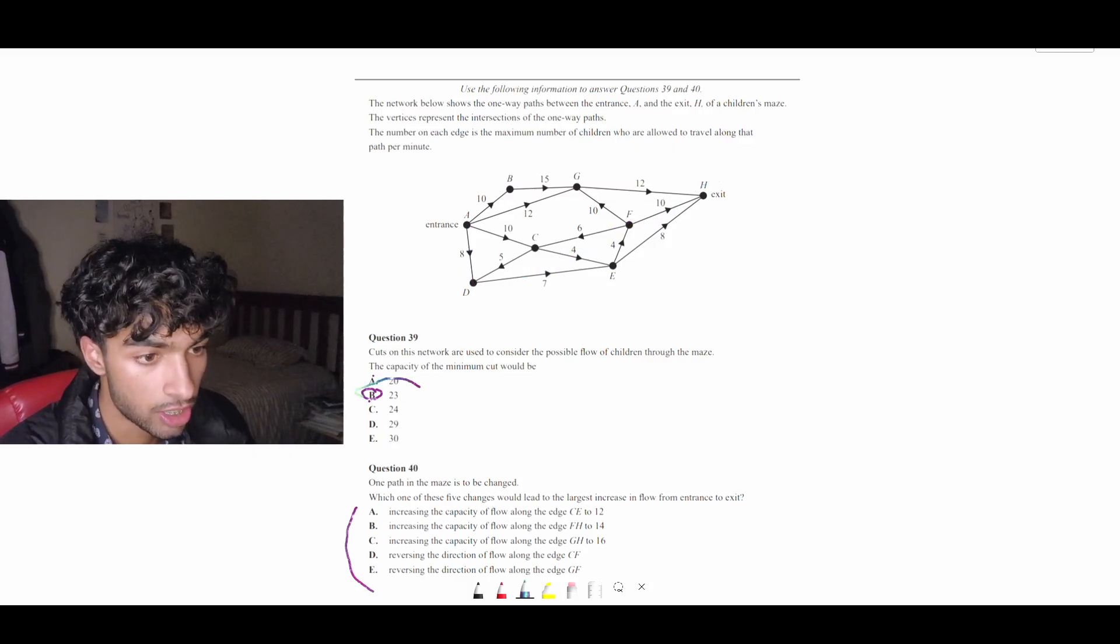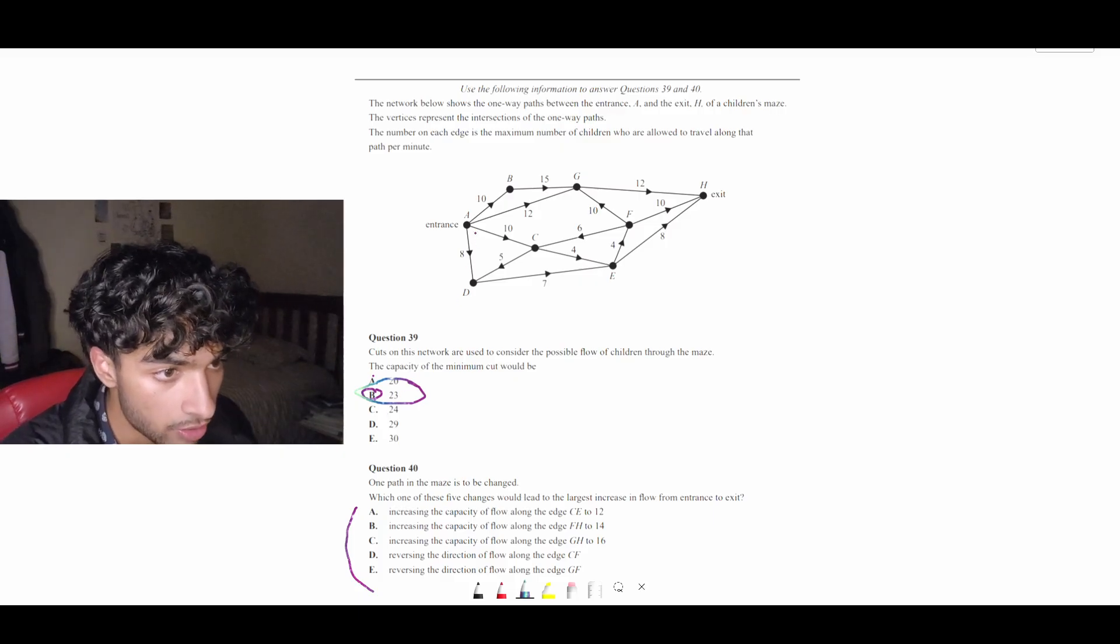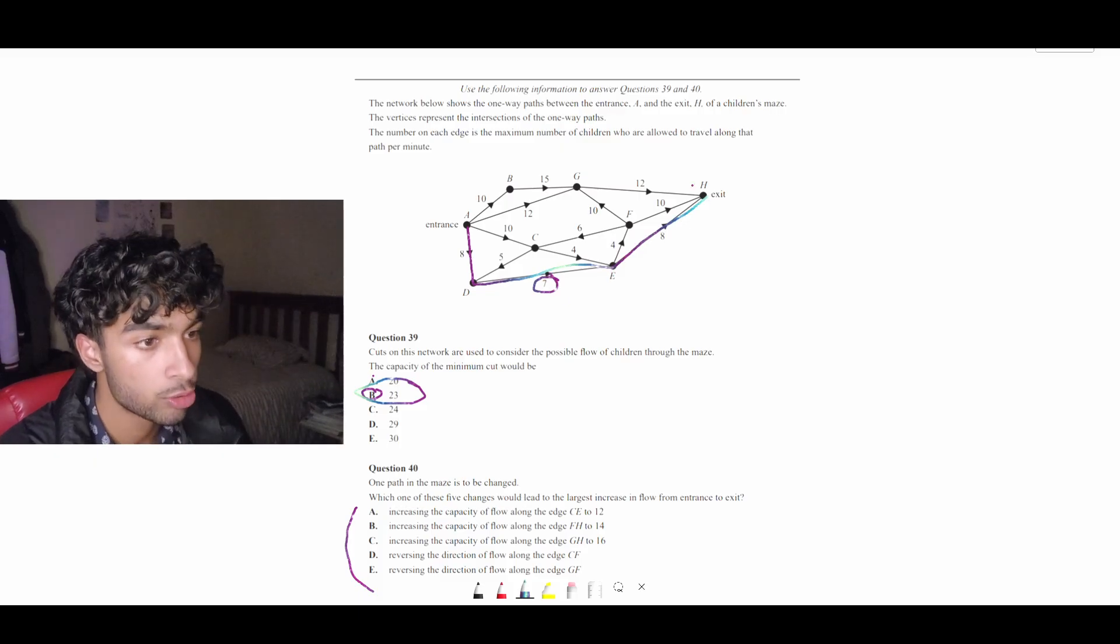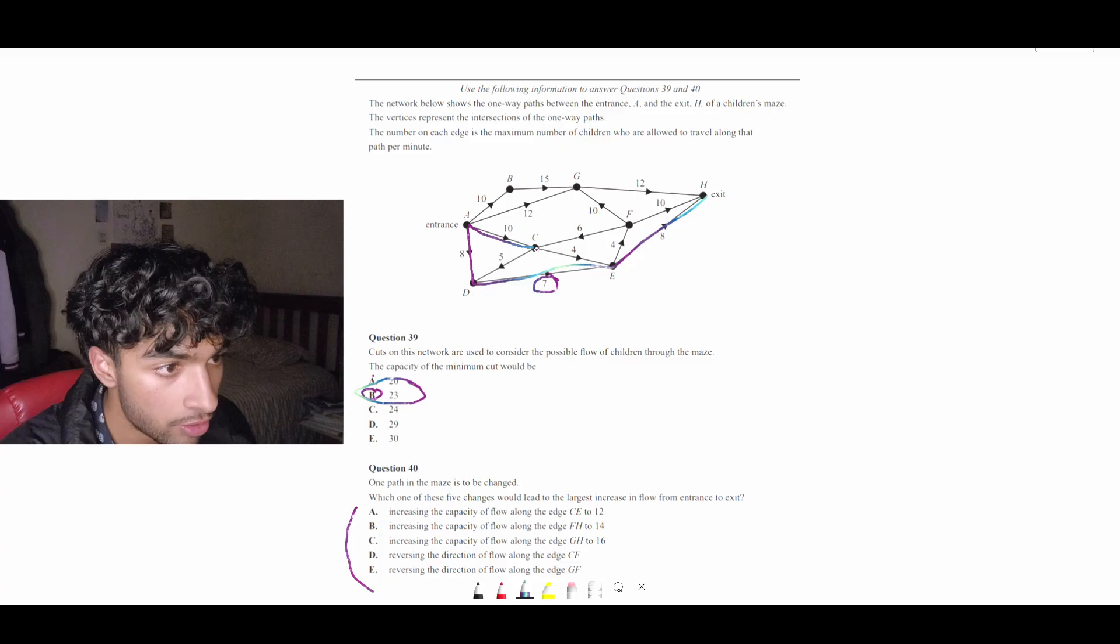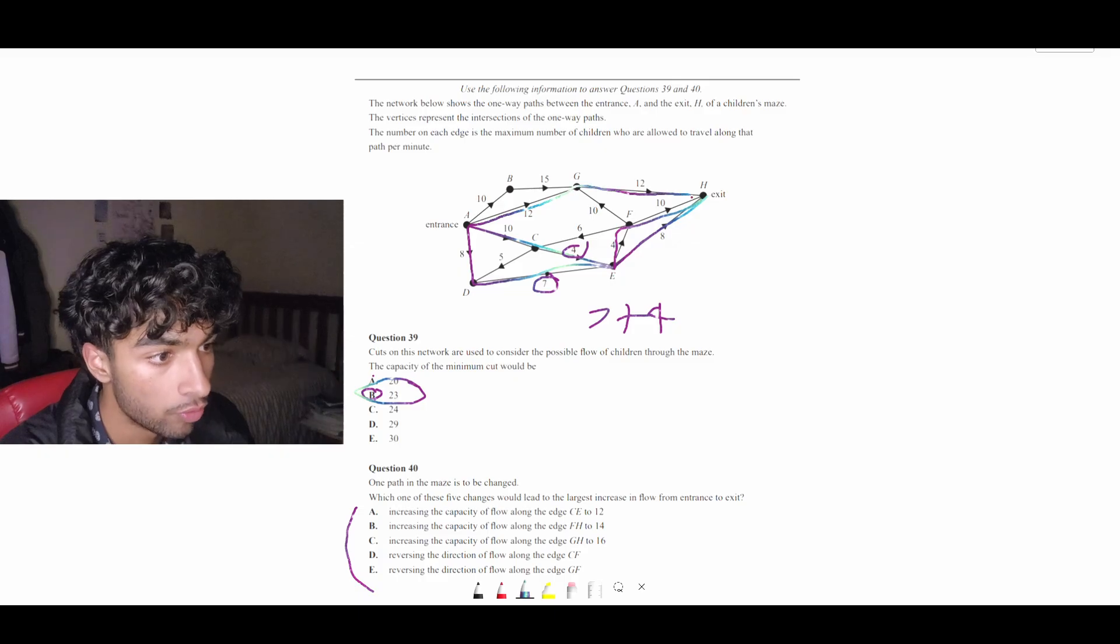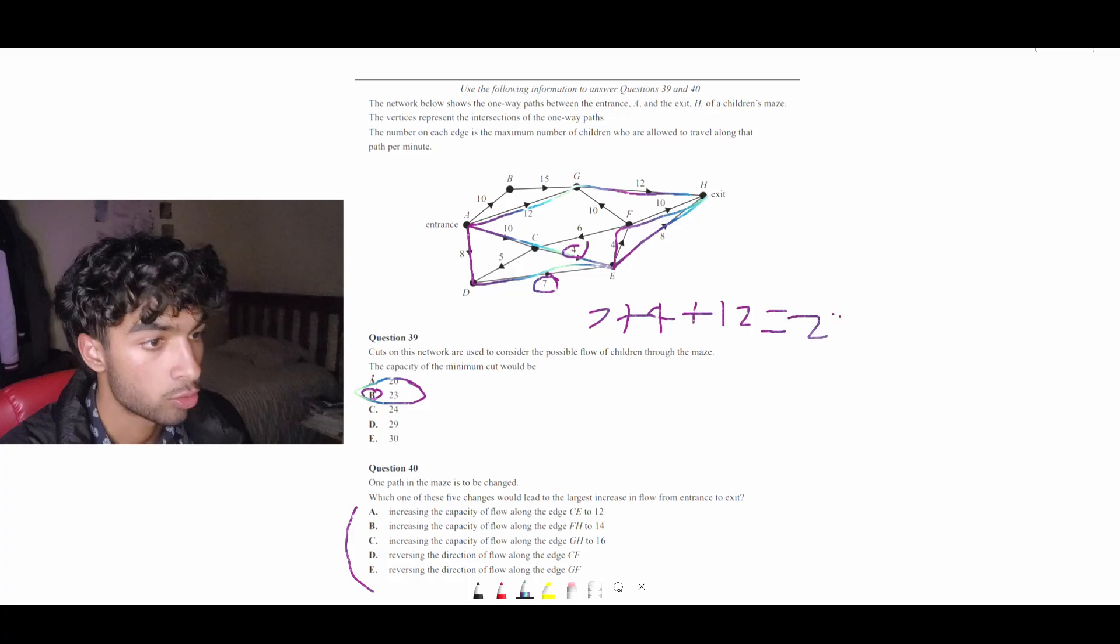the way we got to this option, the way we derived 23 for question 39B is if we go down here, 8, 7, 8, this 7 is what contributes to it. Then we have this other path, 10, 4, 4, 8, 10. That 4 contributes to that. So 7 plus 4. And then we have 12, 12. So 7 plus 4 plus 12 gives us that 23. So that's what it's derived from.